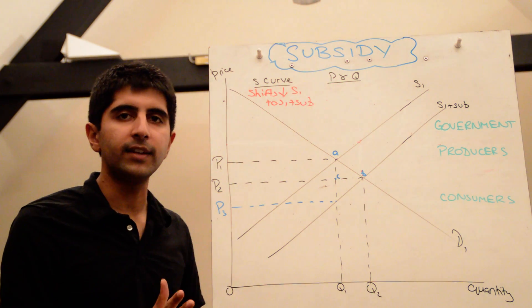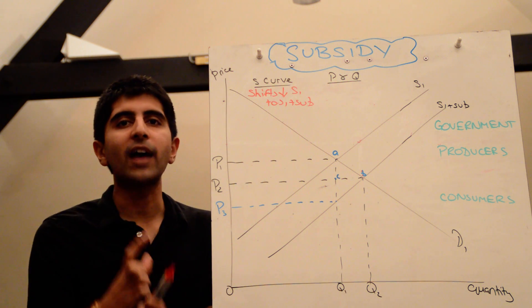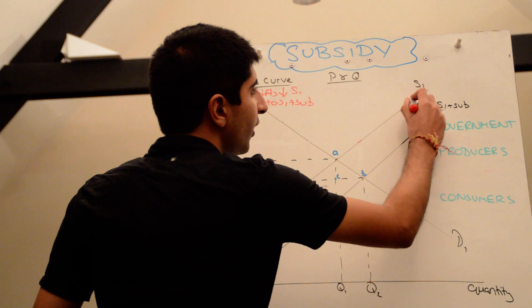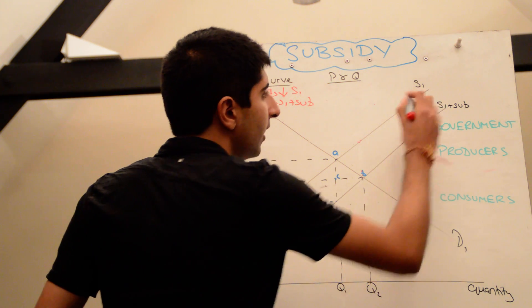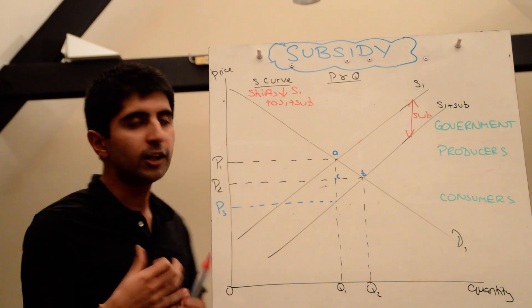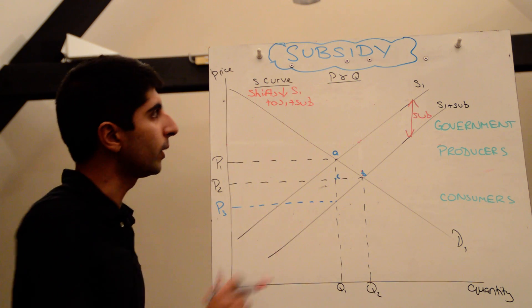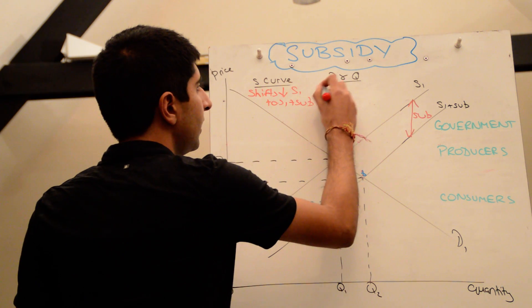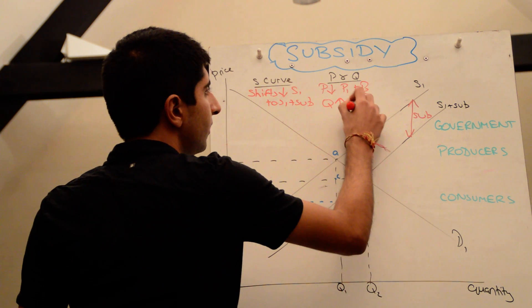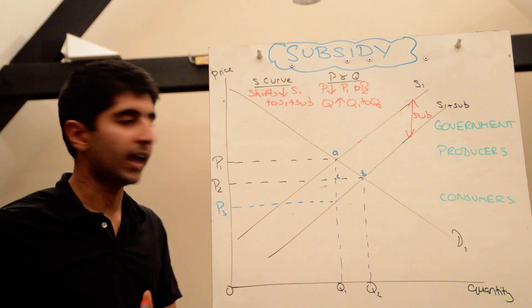Shifting supply down, don't say to the right in an exam, say shift downwards because that downward shift is the value of the subsidy. The vertical distance between the two supply curves is the monetary value of the subsidy, so it's a downward shift. As a result, a new equilibrium in the market is formed from P1, Q1 to now P2, Q2. As a result of a subsidy, the price is falling from P1 to P2 and the quantity is increasing from Q1 to Q2. Very simple stuff. That is the utter basics right there.